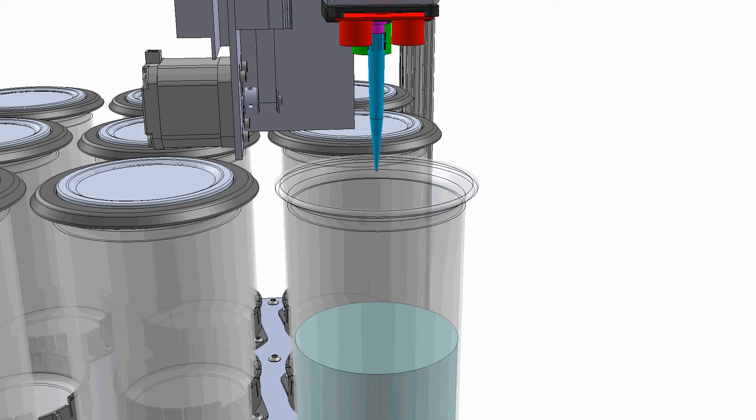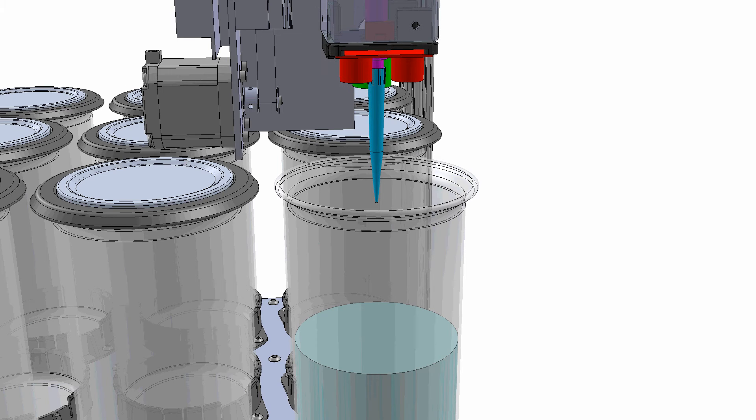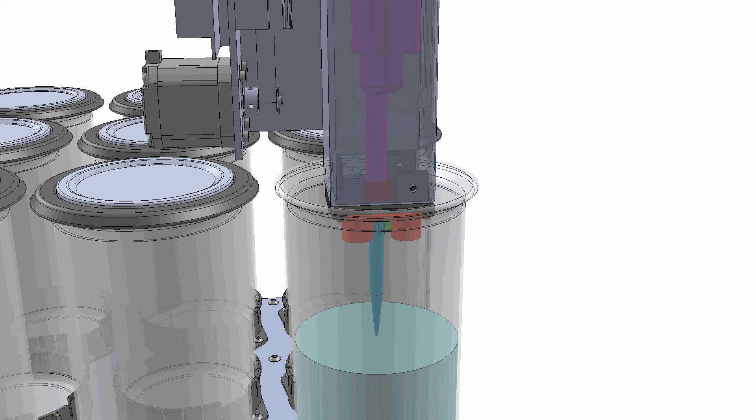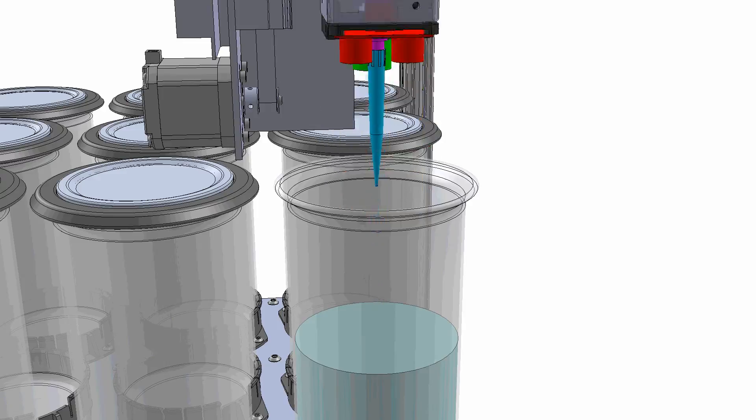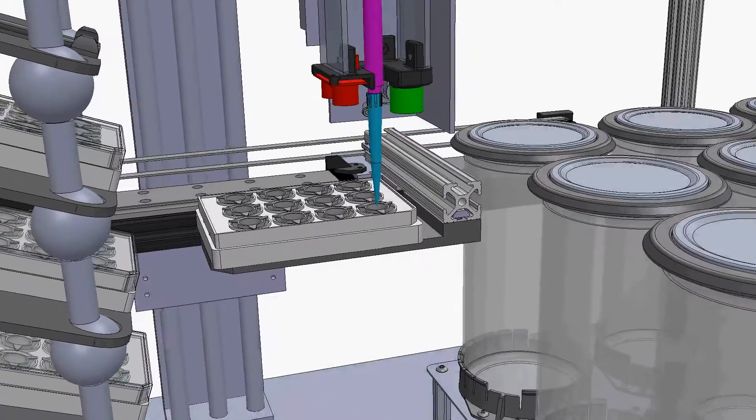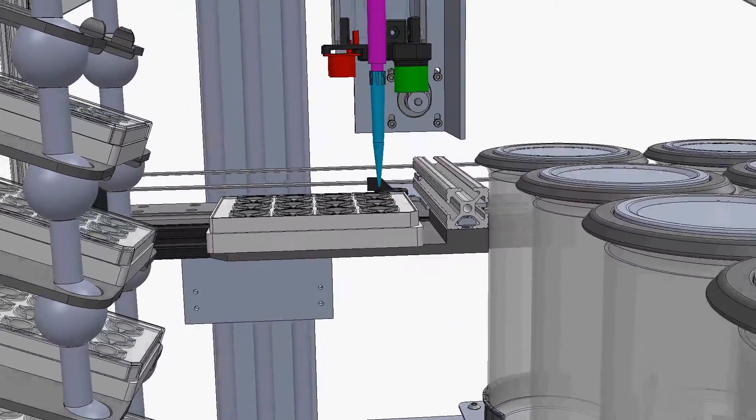The pipette is positioned over the beaker. The red ultrasonic sensor measures the fluid level to 1mm accuracy. The pipette tip is positioned just below the bacterial suspension surface. The pipette is moved over the appropriate well and the bacterial suspension is dispensed.